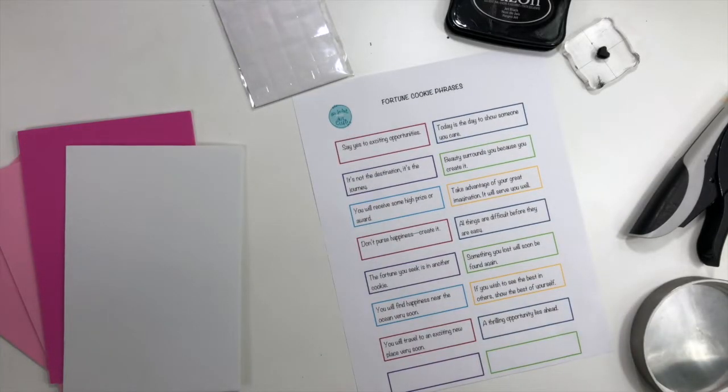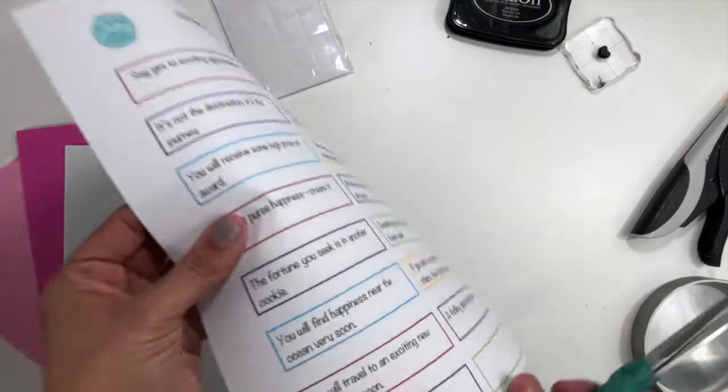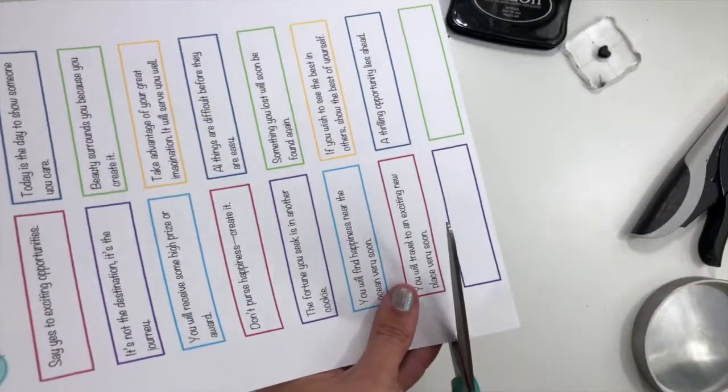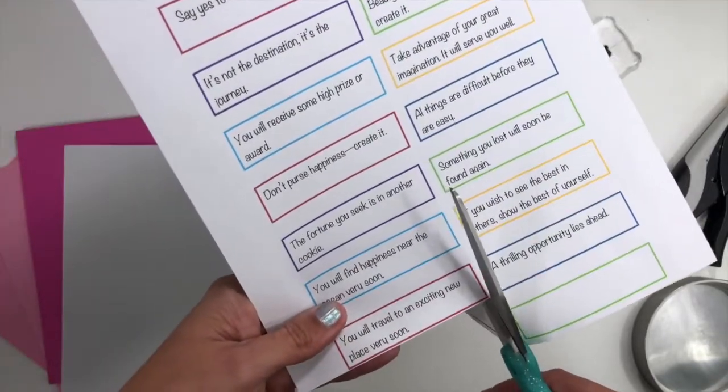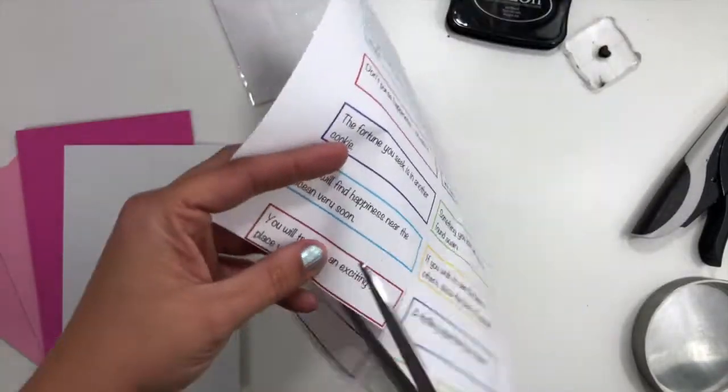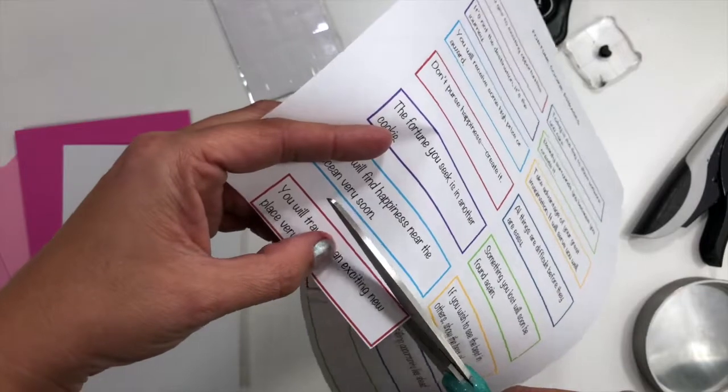The very first thing I'm going to do here is cut out one of my strips that I want to use. I could certainly do this on my paper trimmer and cut them all out at once, but I'm just going to use one.